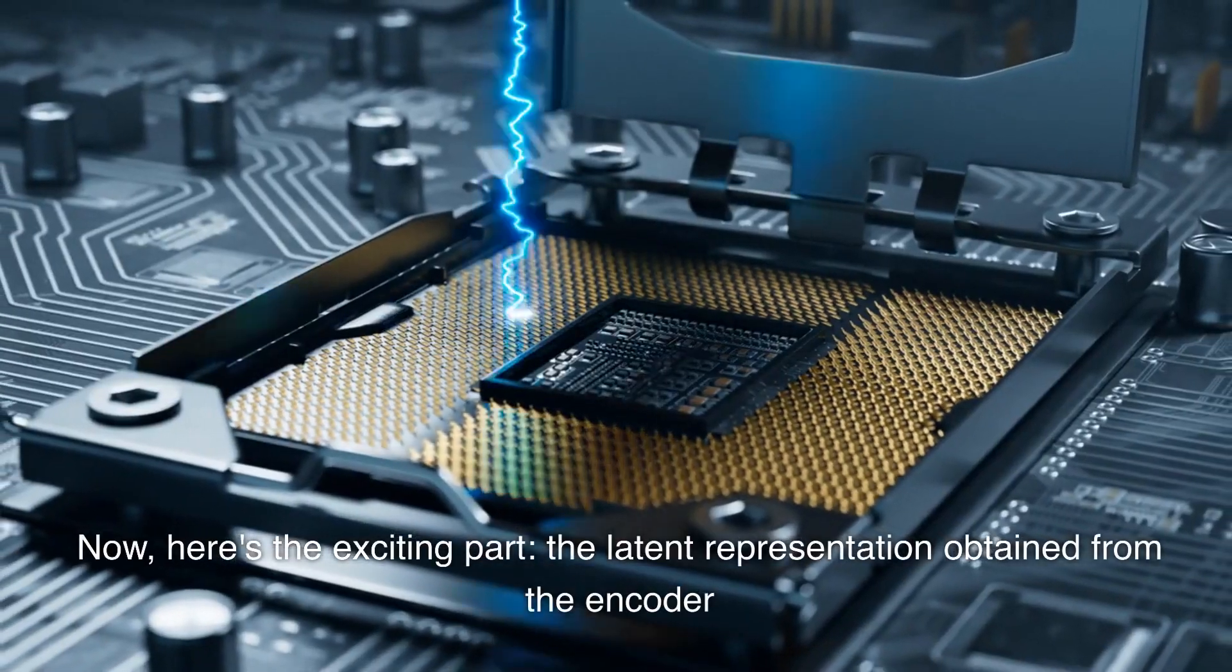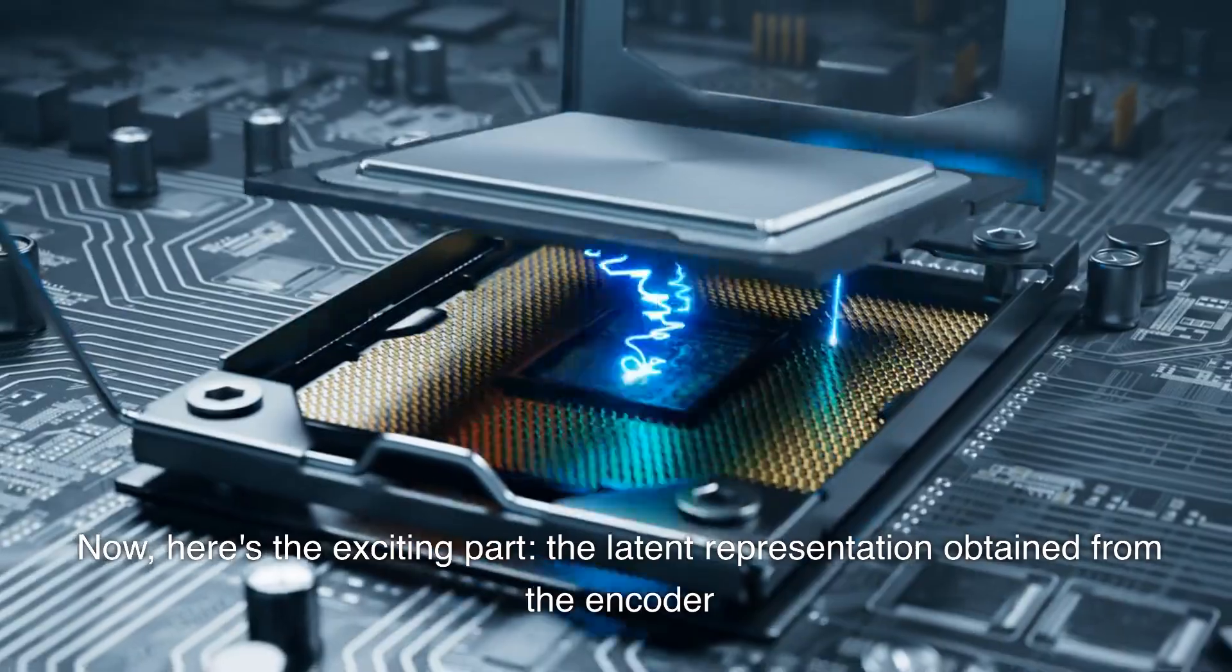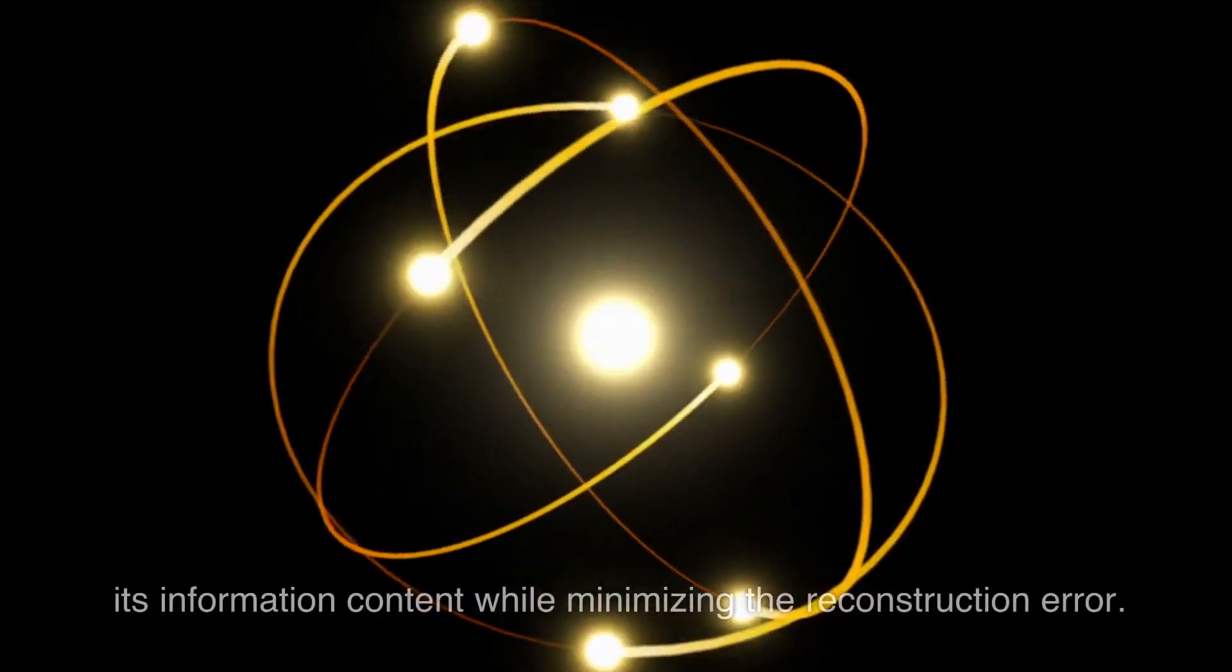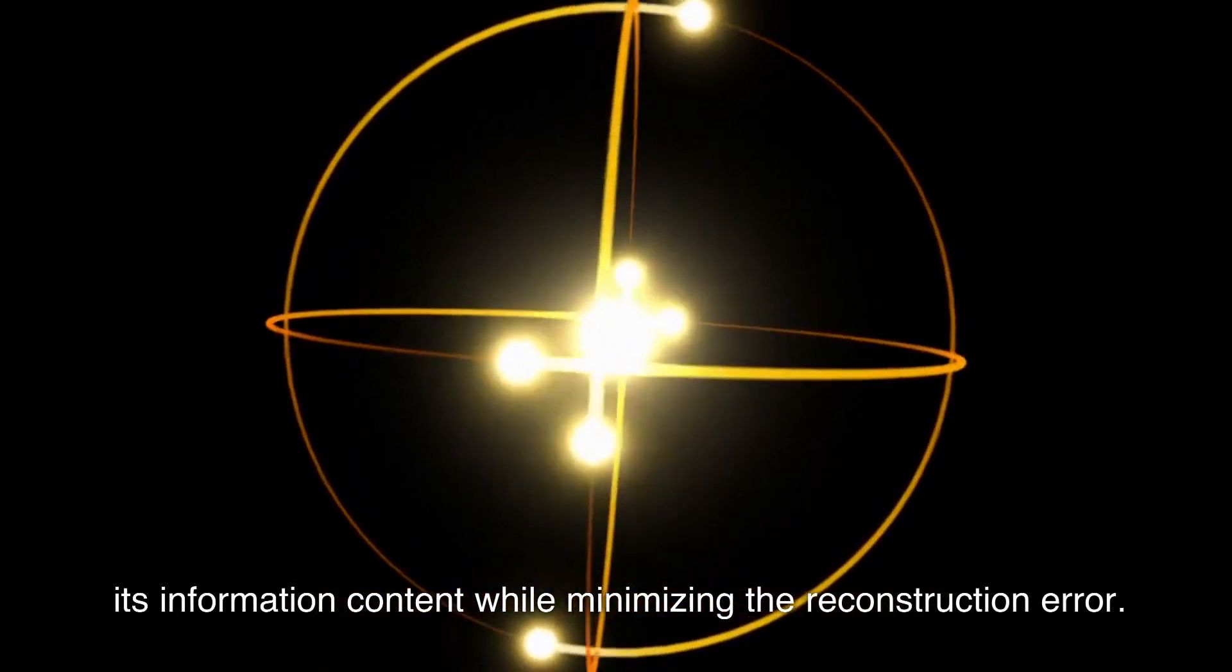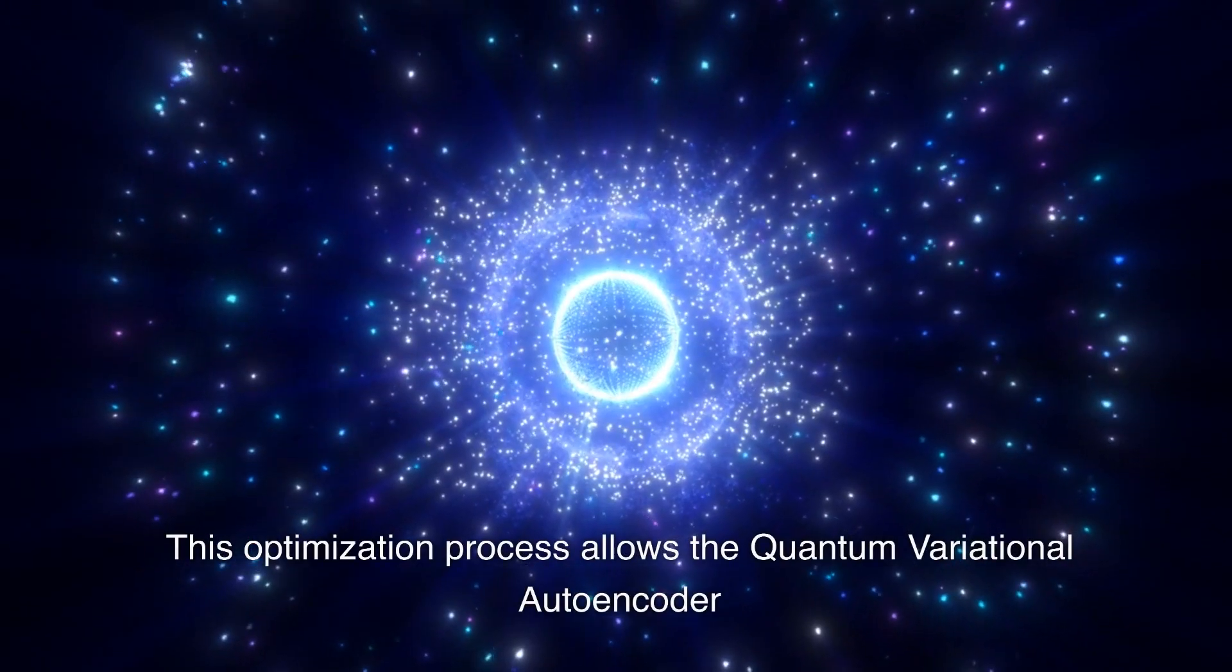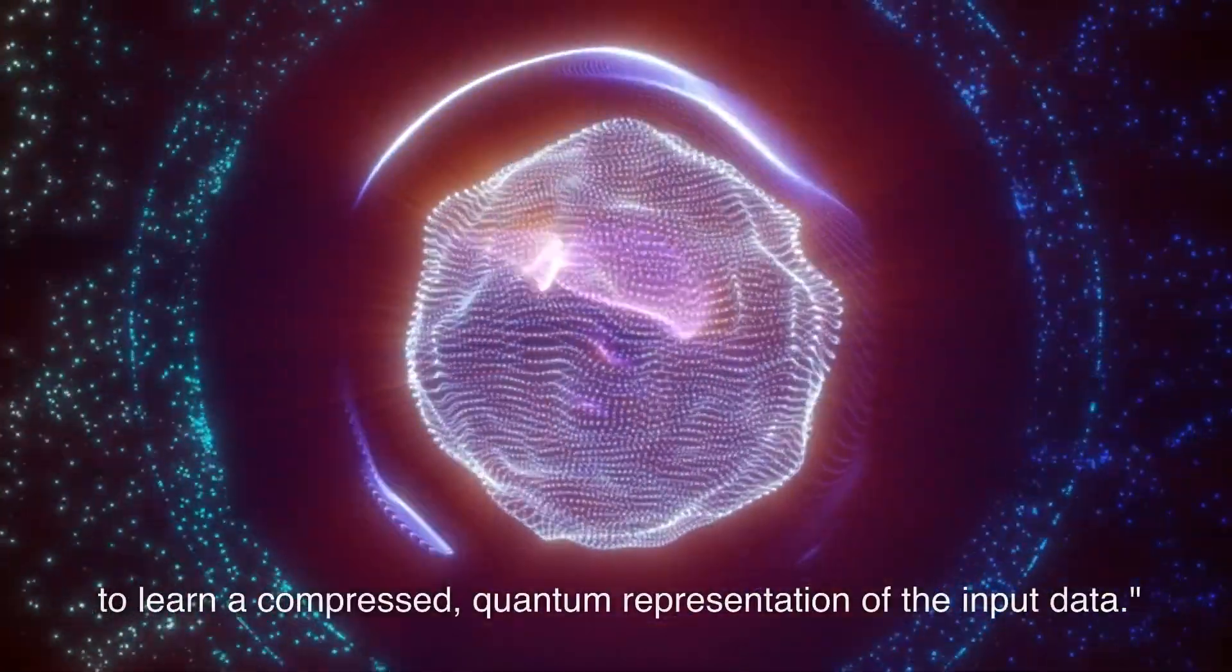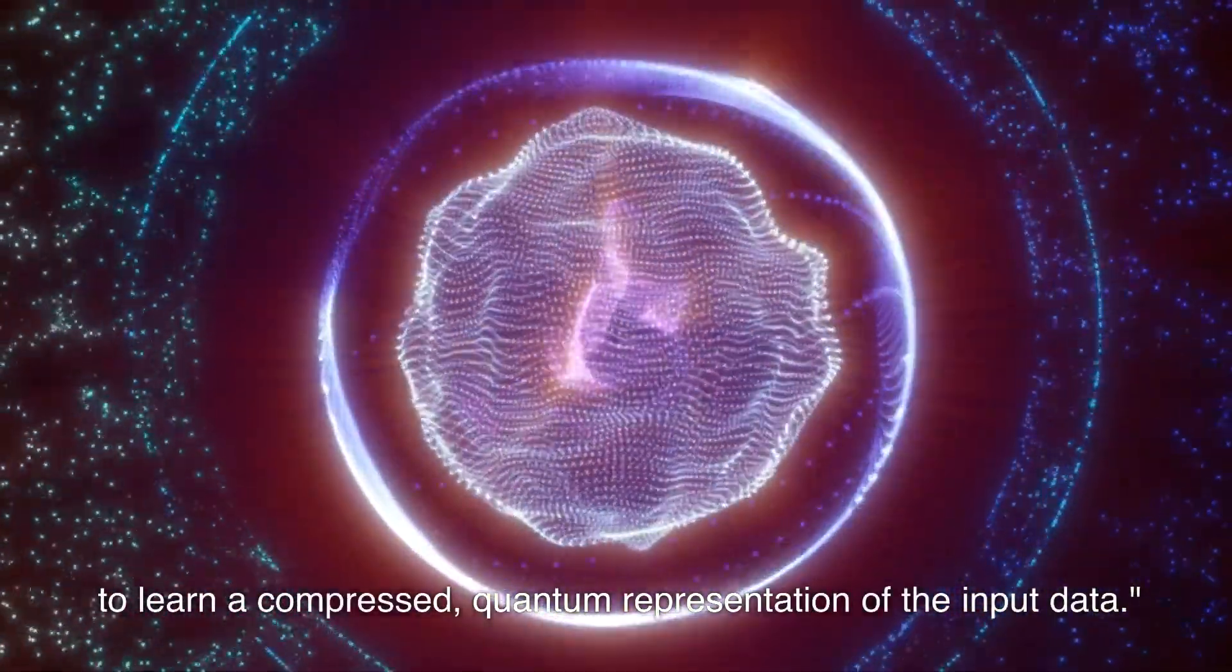Now, here's the exciting part. The latent representation obtained from the encoder is then optimized using variational techniques to maximize its information content while minimizing the reconstruction error. This optimization process allows the quantum variational autoencoder to learn a compressed quantum representation of the input data.